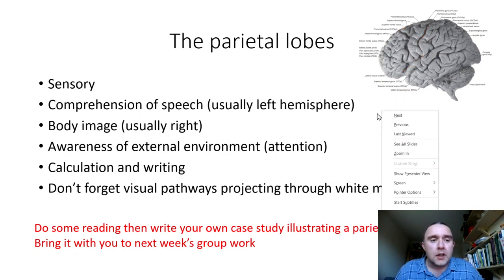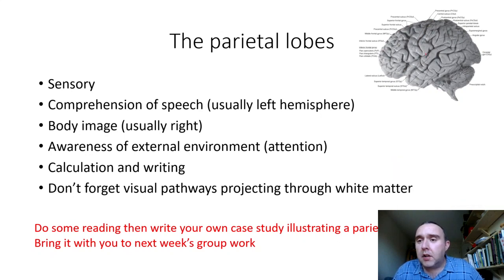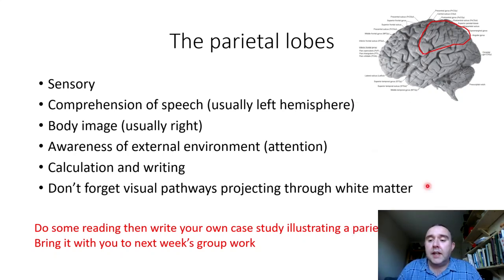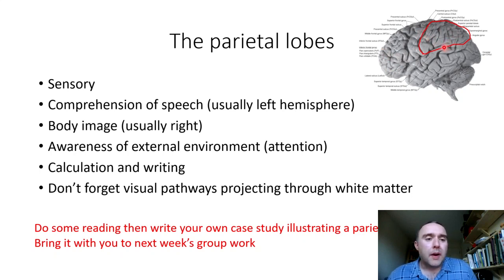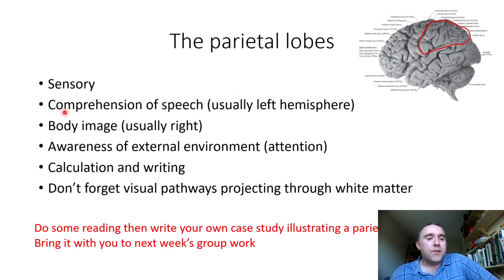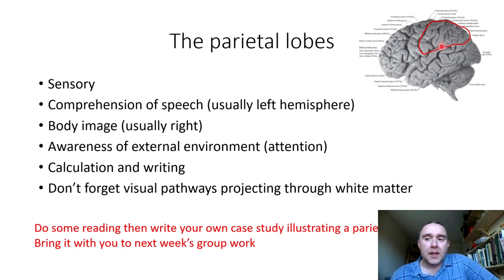Let's take a look at the parietal lobes. The parietal lobes are sited posterior to the central sulcus. Whereas the frontal lobes have their major function with regard to motor function, the parietal lobes are primarily sensory — this fits with the pattern of motor structures anteriorly and sensory structures posteriorly. They're important for the sensory aspect of language, specifically the comprehension of speech. Usually the left parietal lobe contains Wernicke's area, which is important for the comprehension of speech.